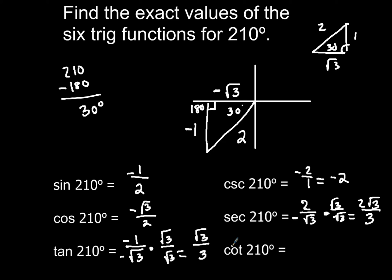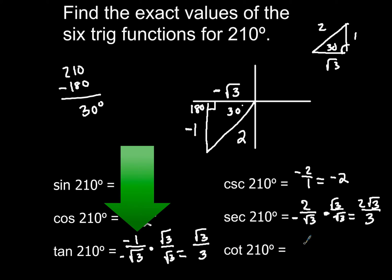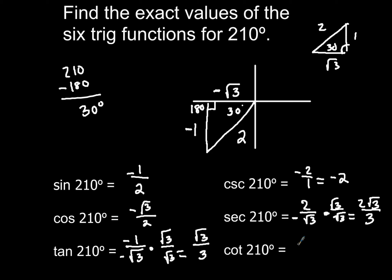And then lastly, we have the cotangent of 210 degrees. But I'm going to look at the very beginning where it was negative 1 over negative square root of 3 when I was looking at the tangent of 210. And that, if I take the reciprocal of that, I would have square root of 3 over 1. And of course, both of these are negative. So when you're done, that'll reduce, that'll simplify to square root of positive 3.